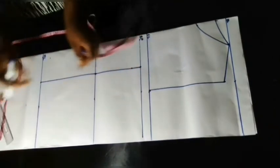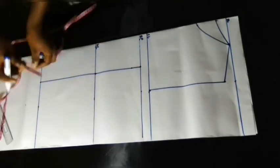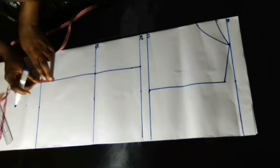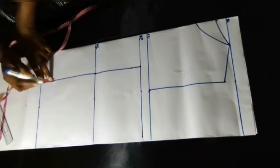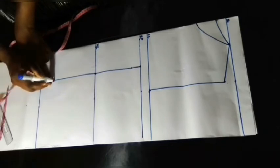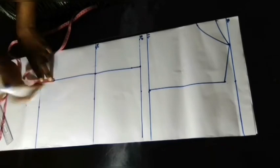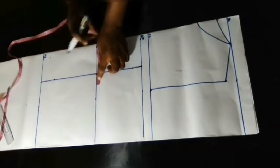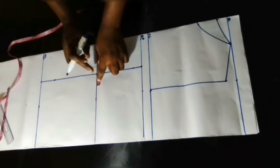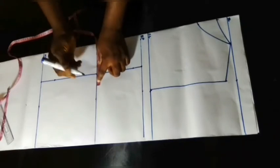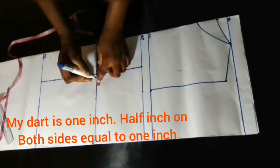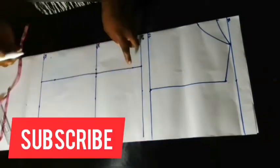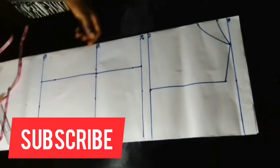From my waistline I'm going to come up by 2 inches, which will be the end point of my dart legs. Then from my waistline I'm going to take half an inch from both sides of my dart line and connect those points together.